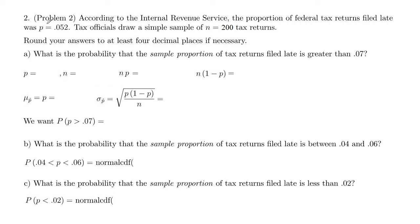This example is like problem two in the exam review. According to the Internal Revenue Service, the proportion of federal tax returns filed late was P equal 0.052. Tax officials draw a simple sample of N equal 200 tax returns.